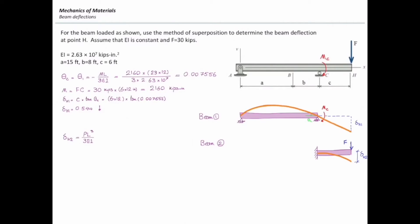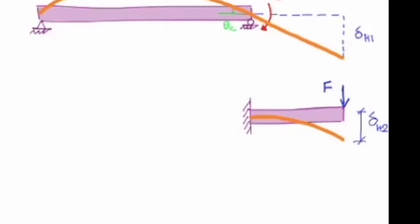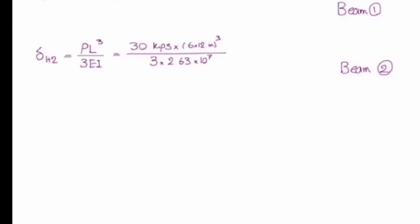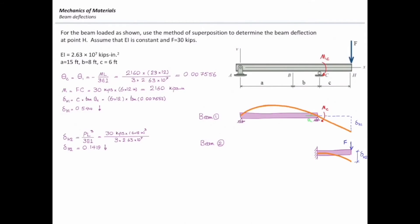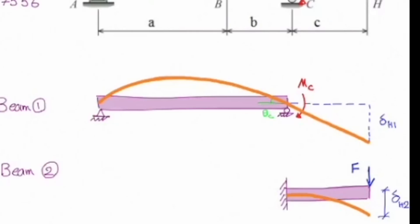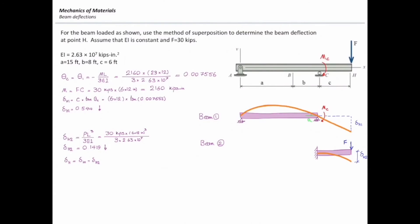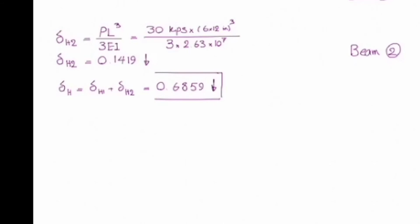P equals F, which is 30 kips. The length is the length of that cantilever part — beam number two — which is C, or 6 feet times 12 inches. So that gives 30 times (6 times 12) cubed over 3EI, which gives a deflection delta H2 equal to 0.1419 inches downward, as expected from the direction of the force. Total deflection is delta H1 plus delta H2, which gives 0.6859 inches.